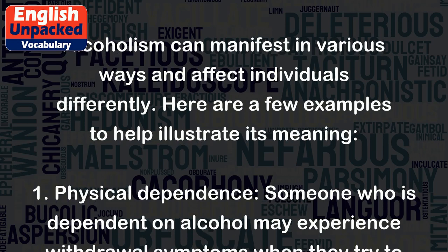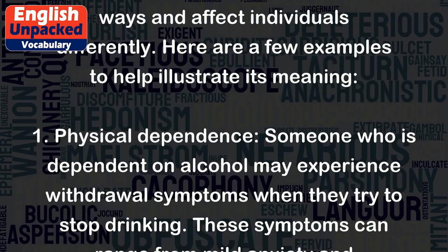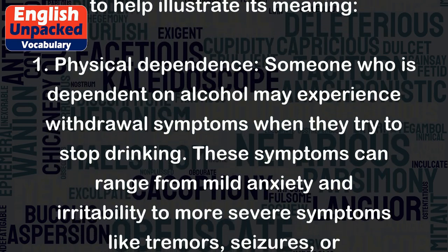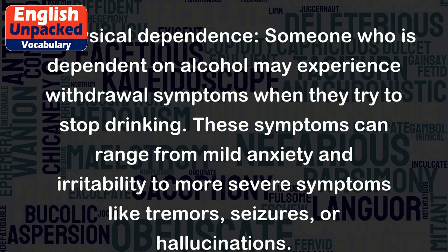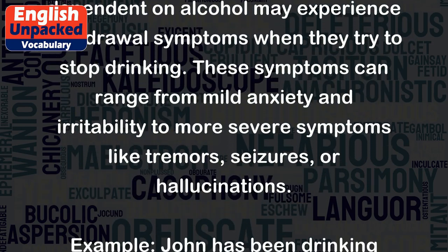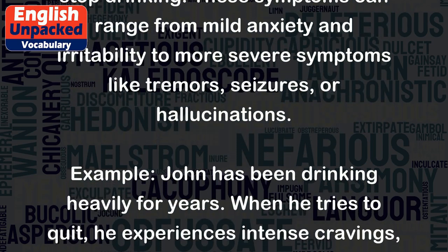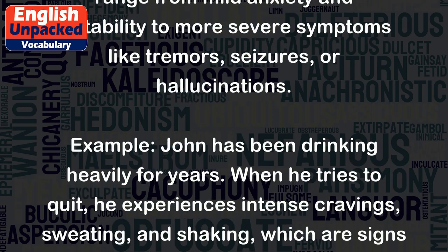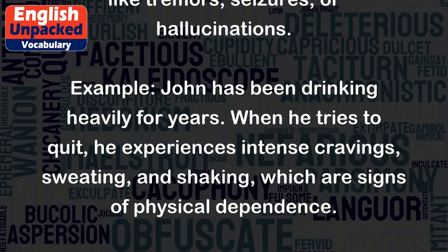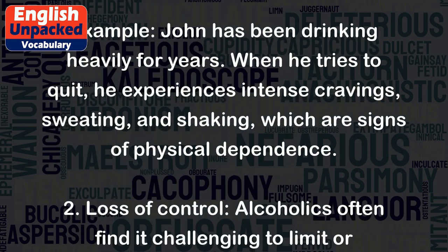1. Physical Dependence: Someone who is dependent on alcohol may experience withdrawal symptoms when they try to stop drinking. These symptoms can range from mild anxiety and irritability to more severe symptoms like tremors, seizures, or hallucinations. Example: John has been drinking heavily for years. When he tries to quit, he experiences intense cravings, sweating, and shaking, which are signs of physical dependence.